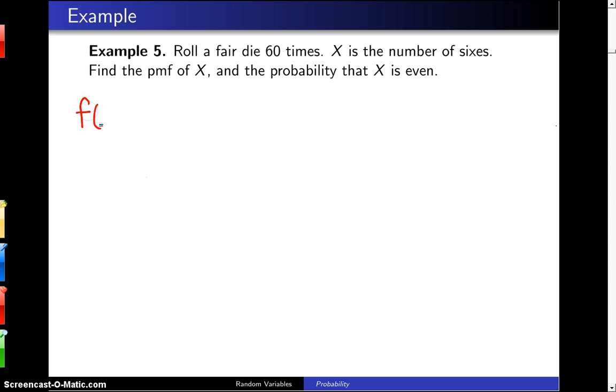So we'll start with the probability mass function f of X. X is a discrete random variable and we're going to begin finding its support. Well if you roll a fair die 60 times, conceivably you could get zero sixes, you get one six, you get two sixes, and although it's unlikely, all 60 of them could come up six.